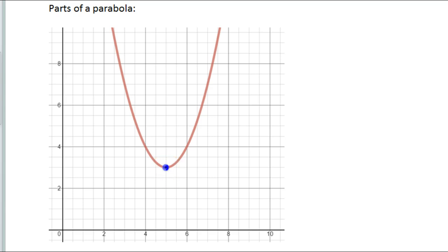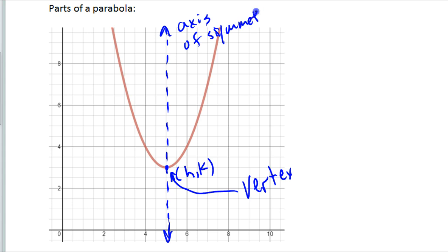This point right here is called the vertex, and its coordinates are h, k. You'll notice that the parabola has symmetry around this vertical line that goes right through the vertex, and that line is called the axis of symmetry. Its equation is always going to be x = h.